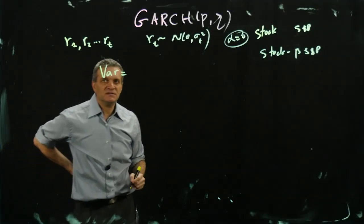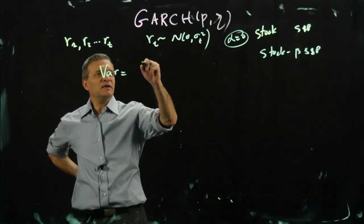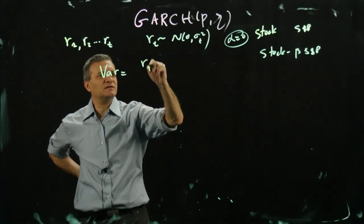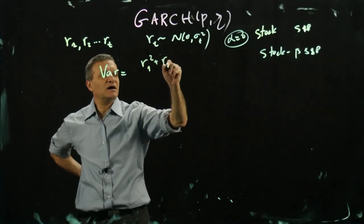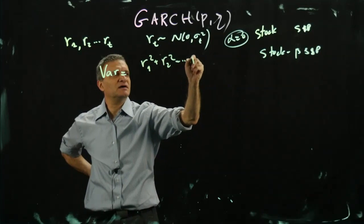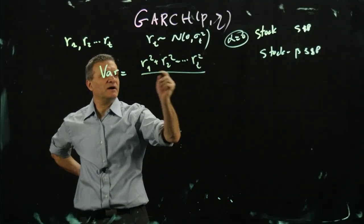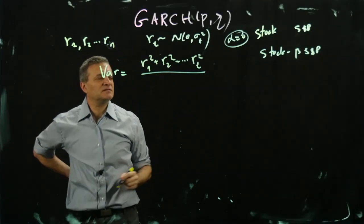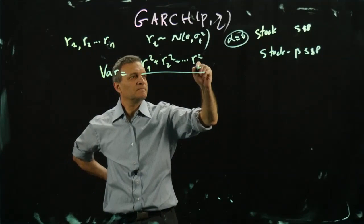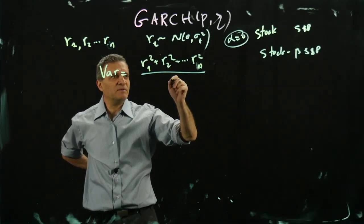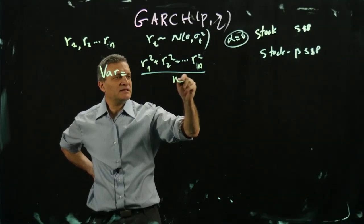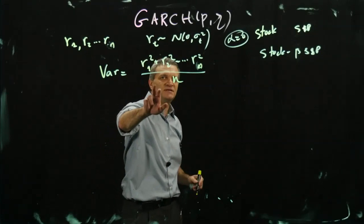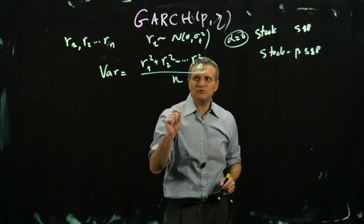Now, how do we measure the volatility of something like that? Watch carefully. The variance is going to be: since the expected value is zero, it's basically r1² + r2² + ... + rT² divided by n.